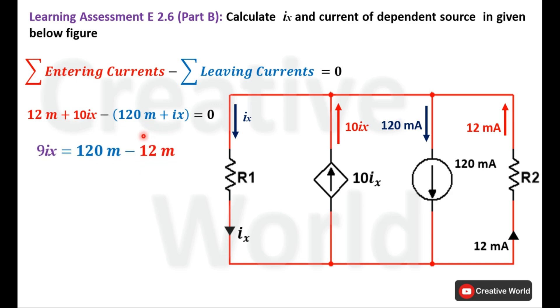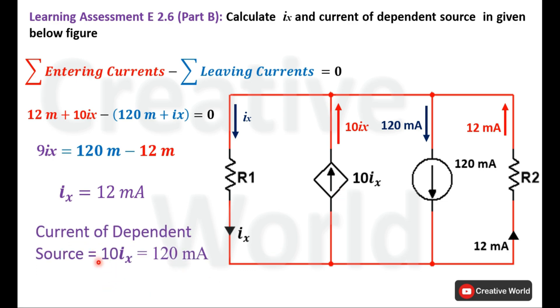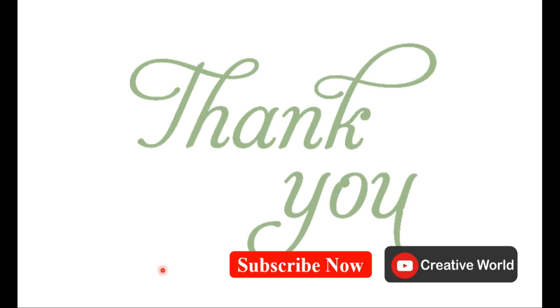Rearranging the equation and dividing both sides by 9 gives us Ix = 12 mA. Now that we have calculated Ix, we can easily calculate the dependent current source: 10Ix = 10 × 12 mA = 120 mA. This concludes Learning Assessment E2.6 of Chapter 2. Thank you, and see you again in the next video.